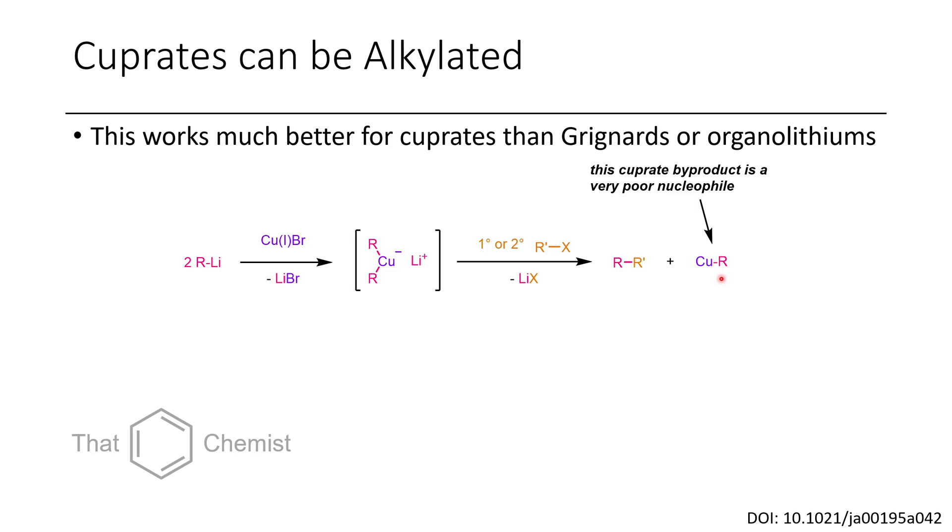You might also notice that when we do this reaction we still have a copper, an alkyl copper byproduct, and you might think, well an alkyl copper is a bit like an alkyl lithium, couldn't this go and do more chemistry? And unfortunately not. When you don't have higher order copper species, the alkyl group tends to be a very poor nucleophile. So for this to be useful again, we would have to re-attack it with another equivalent of an alkyl lithium, otherwise this would just be quenched in workup.